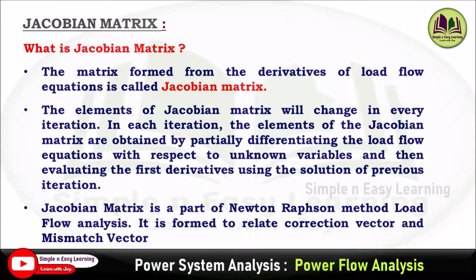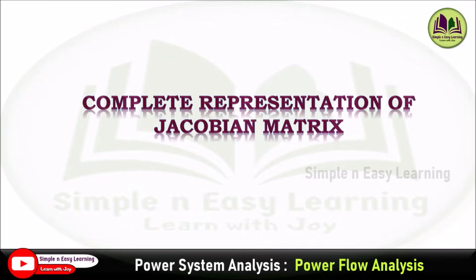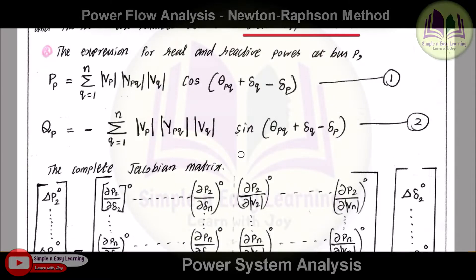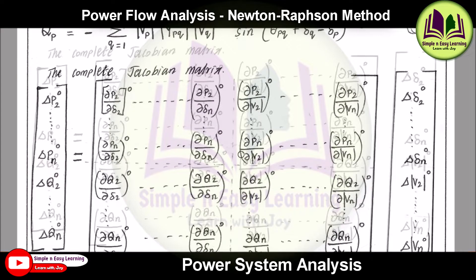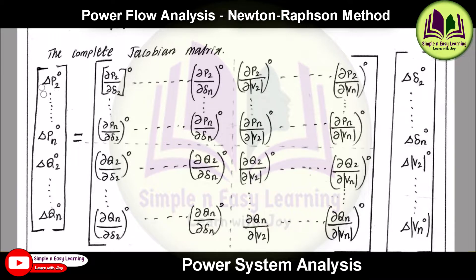Now let us see the complete representation of the Jacobian matrix. The complete Jacobian matrix can be represented like this, so here the values vary from ΔP2 to ΔPn, similarly ΔQ2 to ΔQn. Since the first bus is a slack bus, we need to consider from the second bus to nth bus.